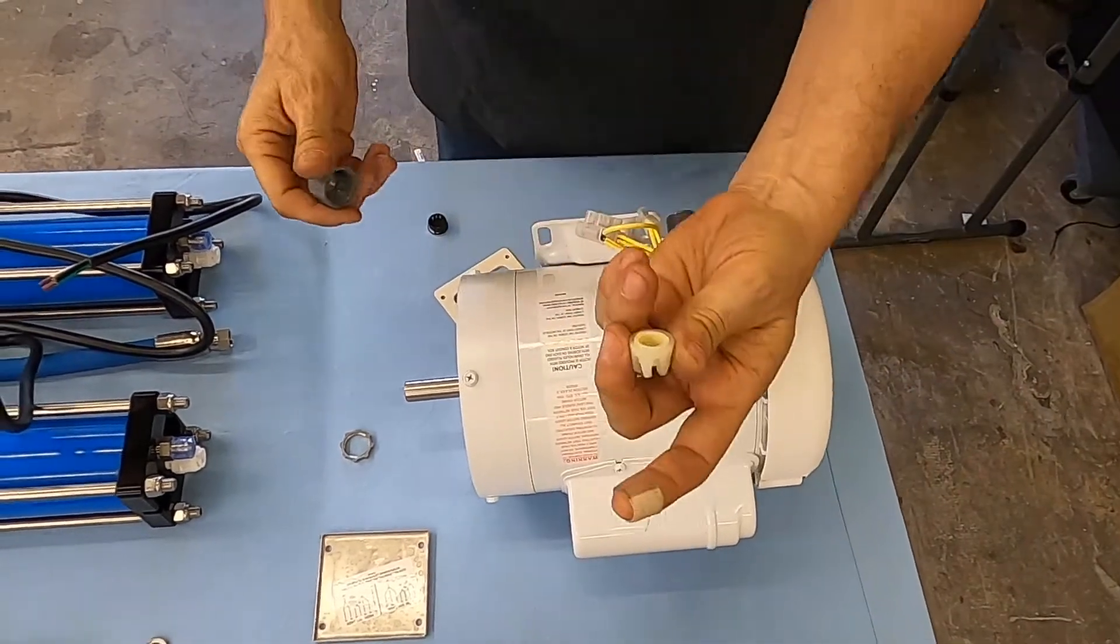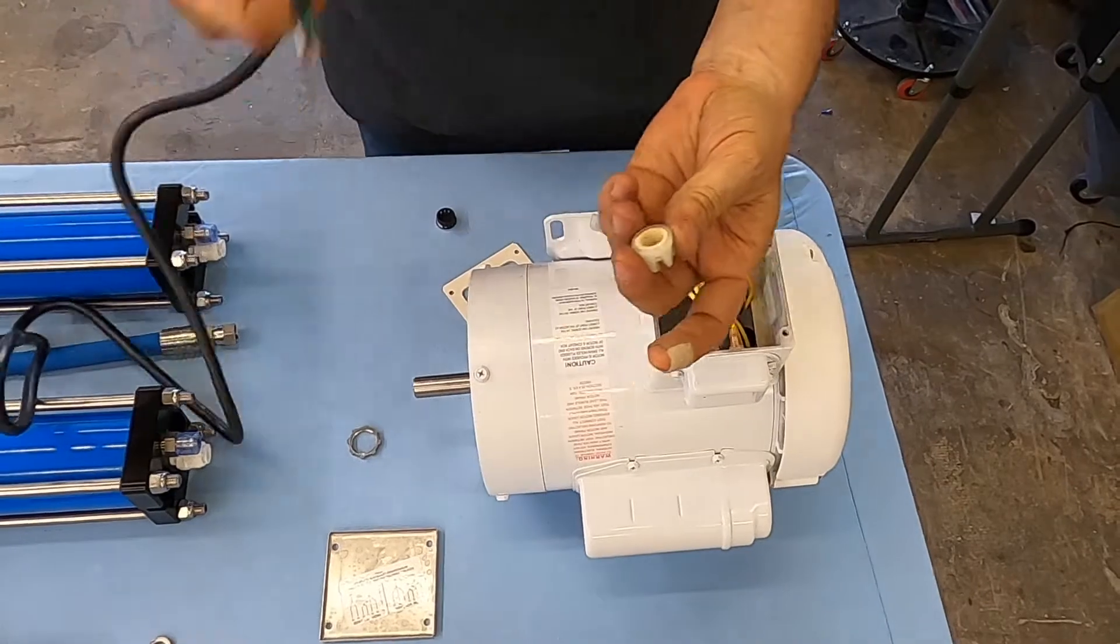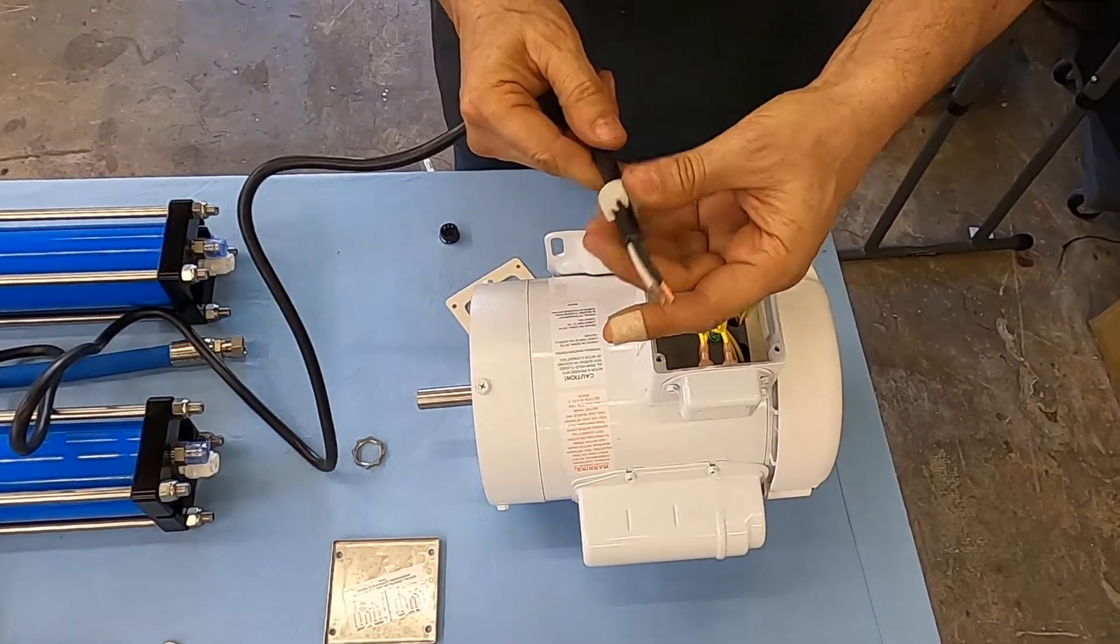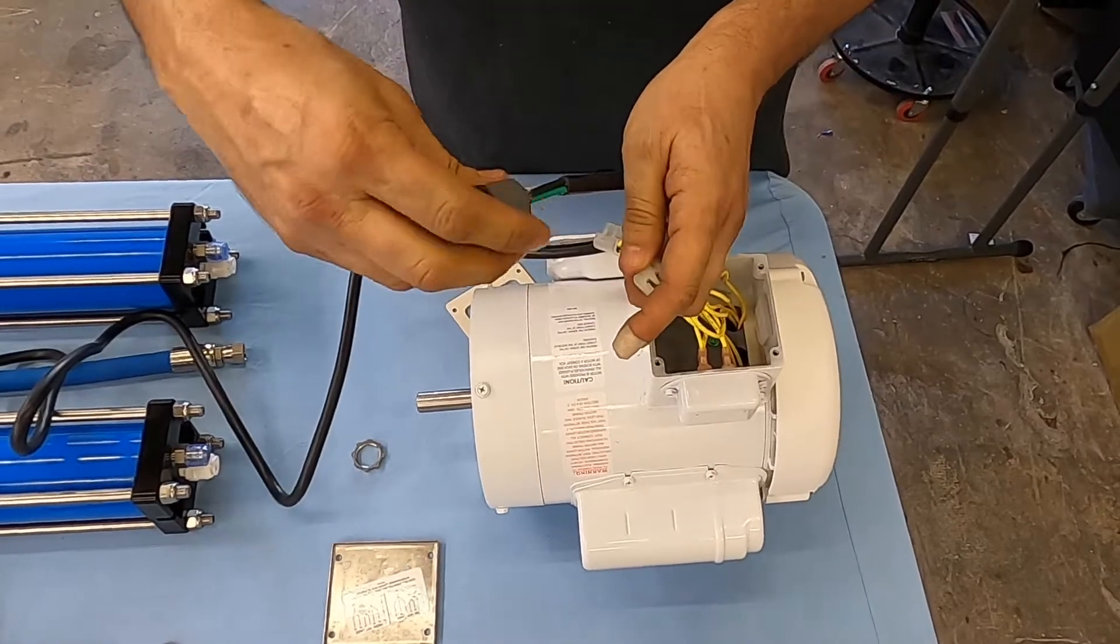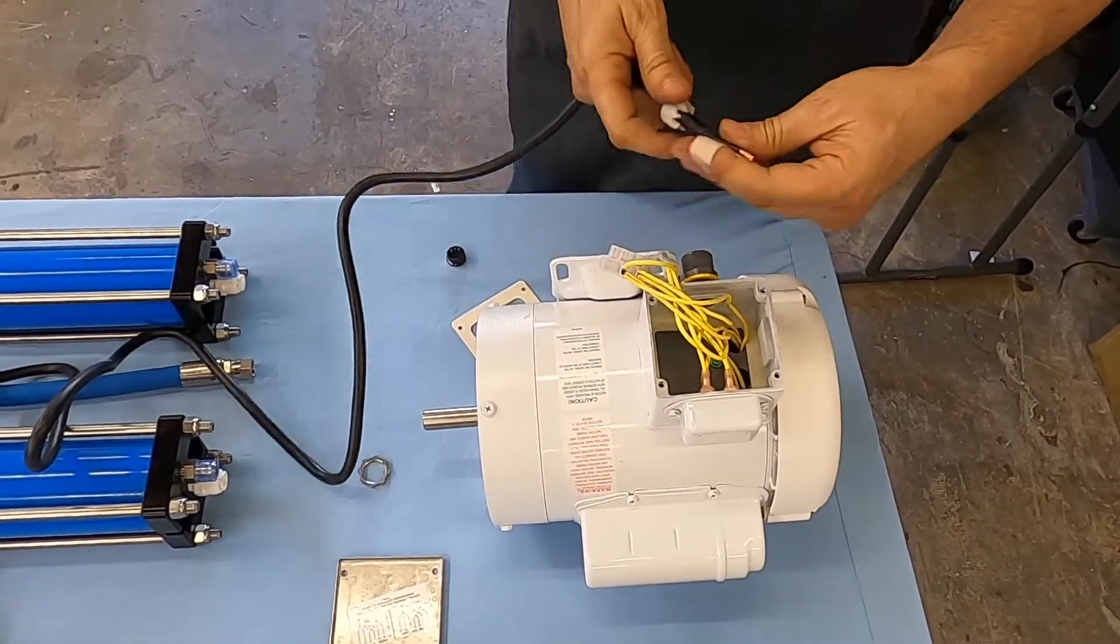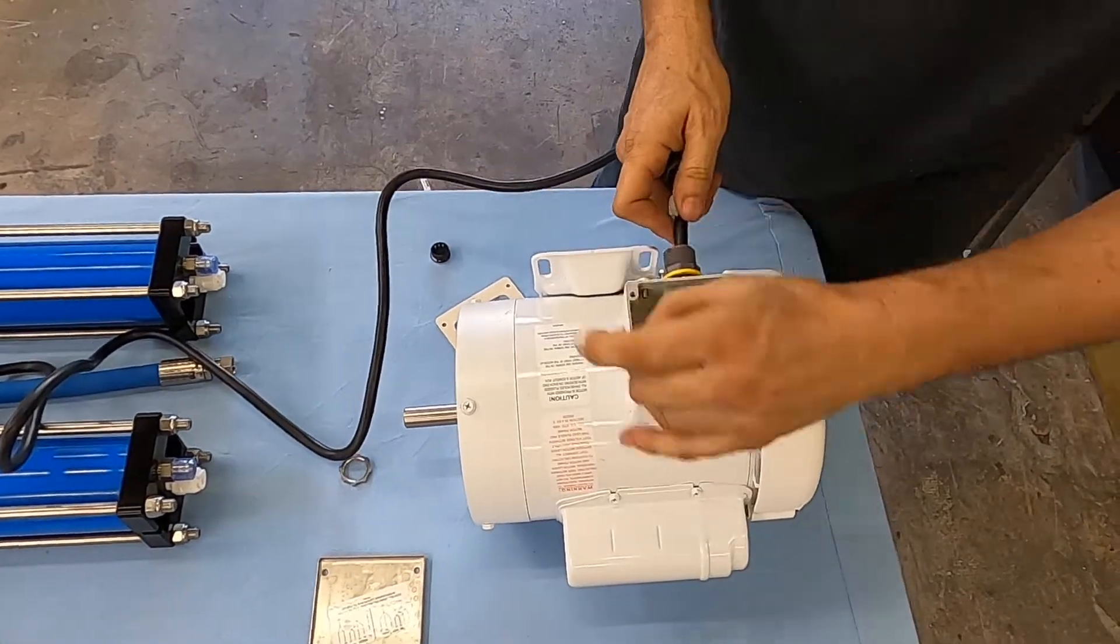There is a collar in here. You run the cord through it. I'm sorry, you put the nut first. Then this. And then all these go through here.